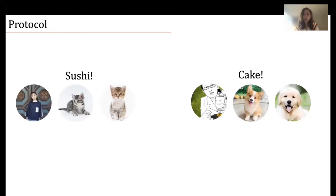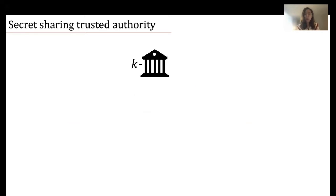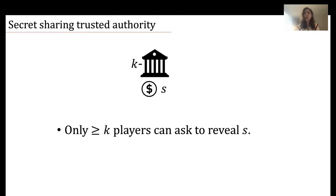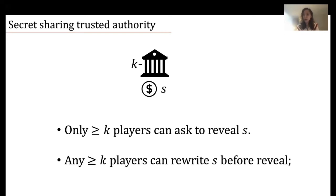To convey the main idea, we will use a simple example of six players — three sushi people and three cake people. We let the sushi people choose a random coin S0 and the cake people choose a random coin S1. The output will be the XOR of these two random bits. For easier understanding, we assume a secret sharing trusted authority parameterized with K that chooses a random coin S and satisfies the following properties: only K or more players can ask the authority to reveal S, and any K or more players can rewrite the value of S before any reveal request. This trusted authority can be implemented by standard crypto and is not needed in the final protocol — it's just for better understanding.